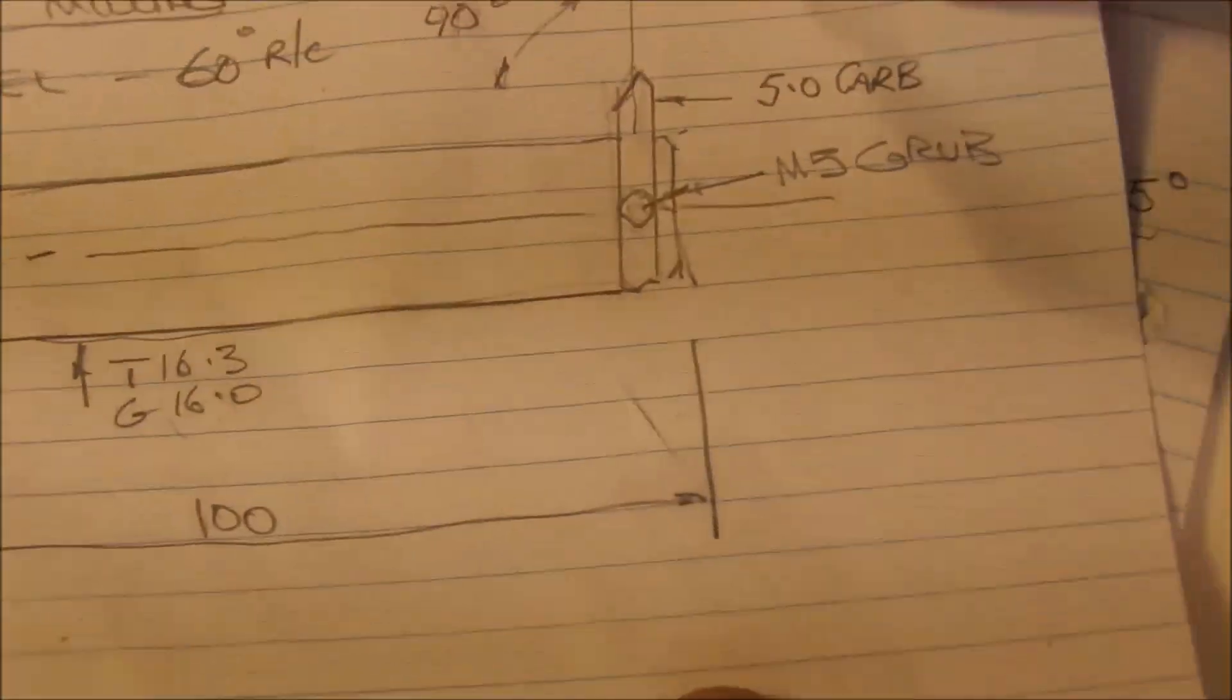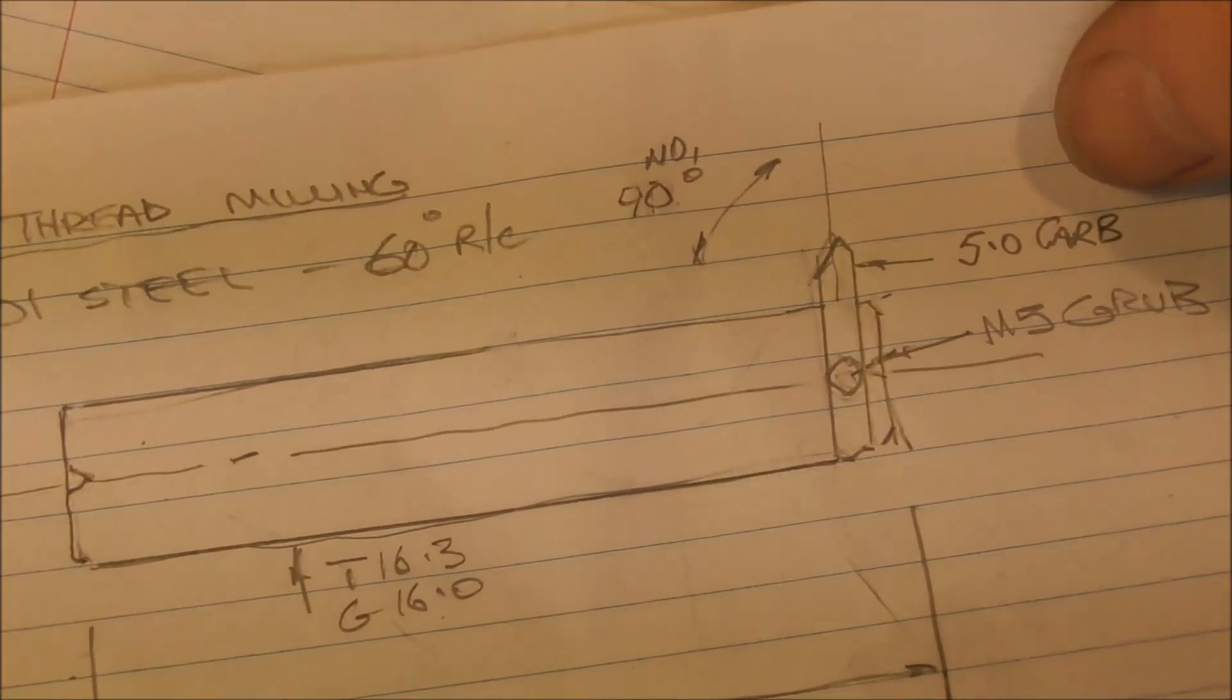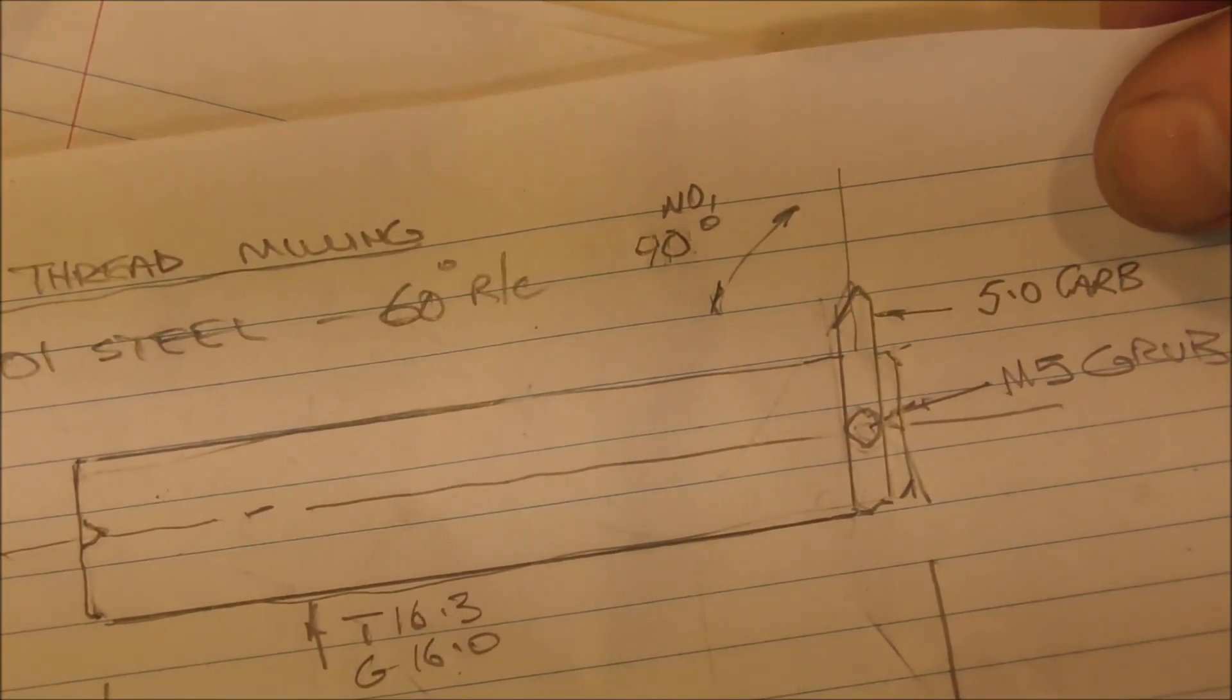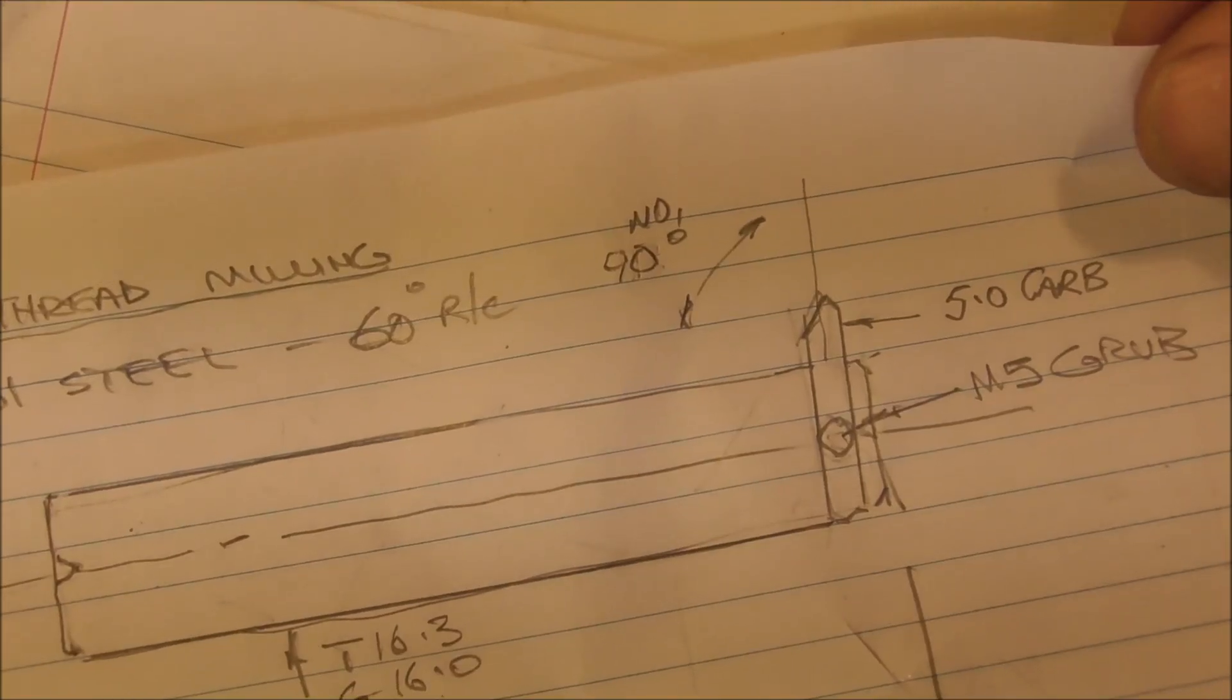So they're external thread milling inserts. There's some details there of the under-the-head thread extender type at 90 degrees.